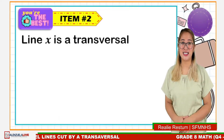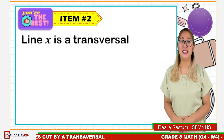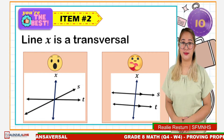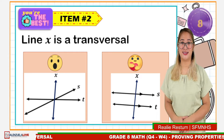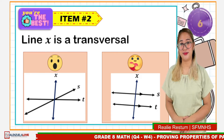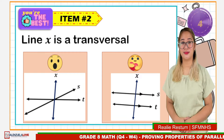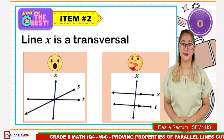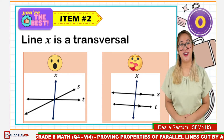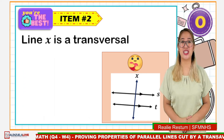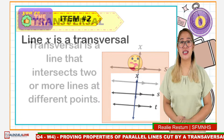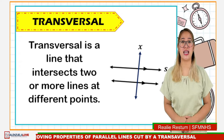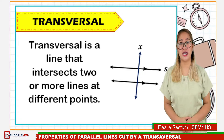Number 2: Line X is a transversal. Time is up! The correct answer is the care reaction. A transversal is a line that intersects two or more lines at different or distinct points.